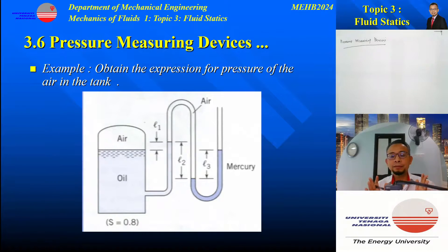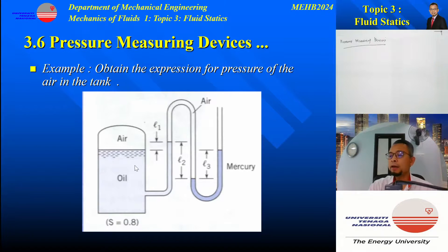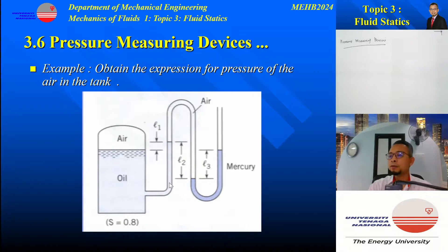Let's look at this simple example where we are asked to obtain an expression for the pressure of air in these systems. We have a container where at the top is air and at the bottom is filled with oil. This is connected with a manometer system which consists of air and mercury. We are asked to find the expression for the pressure of this air inside the tank.